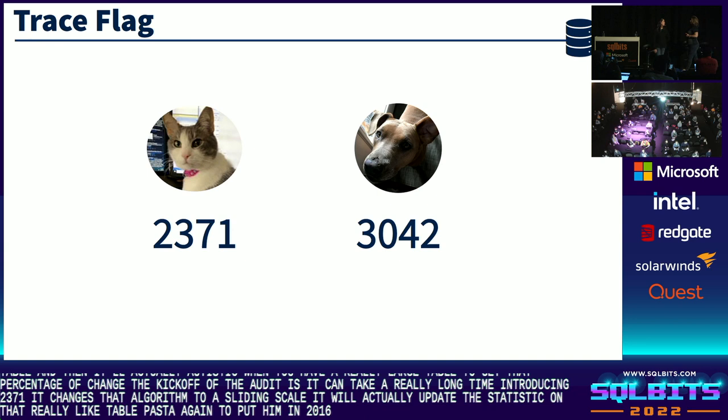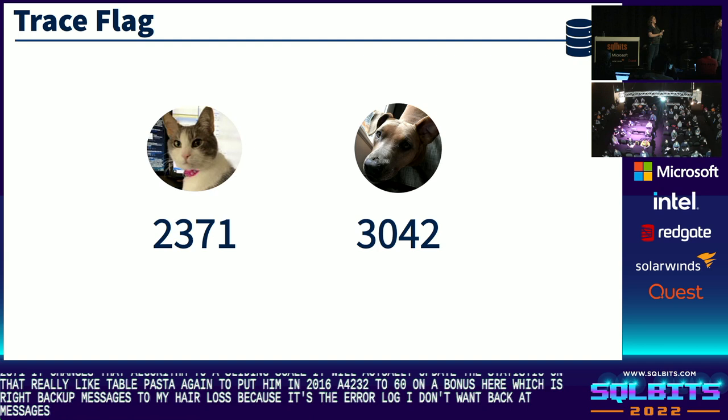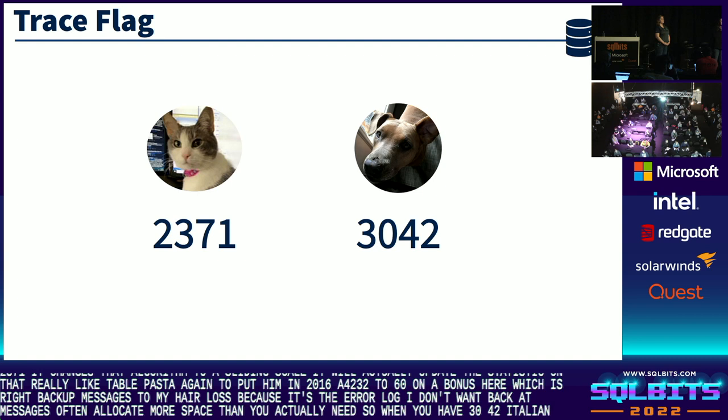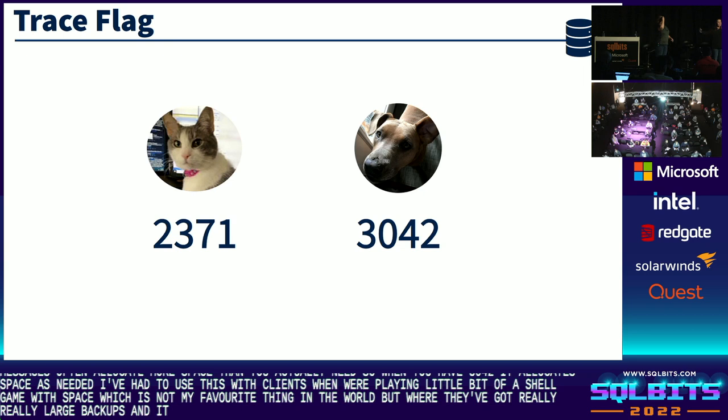I really like trace flag 3042. I'm going to throw in a bonus — 3226, which is: don't write backup messages to my error log, because it's the error log. I don't want backup messages there. 3042 has to do with backup when you have compression enabled. By default, when you start to do a backup, it will typically allocate more space than you actually need. With 3042, it allocates space as needed. I've used this with clients when they've got really large backups taking up way too much space and then shrinking it down.